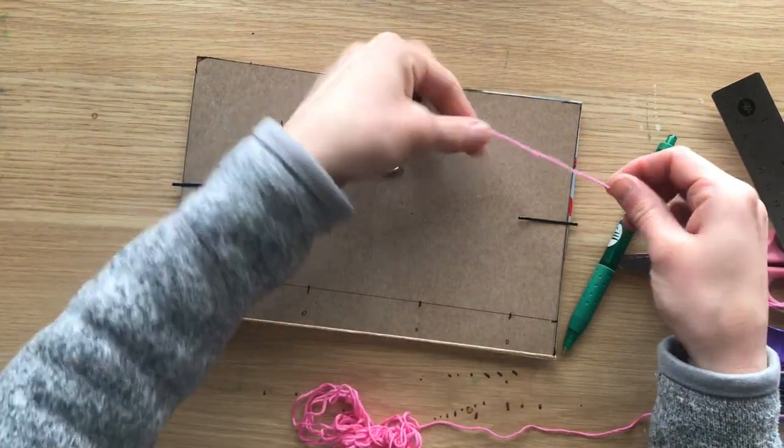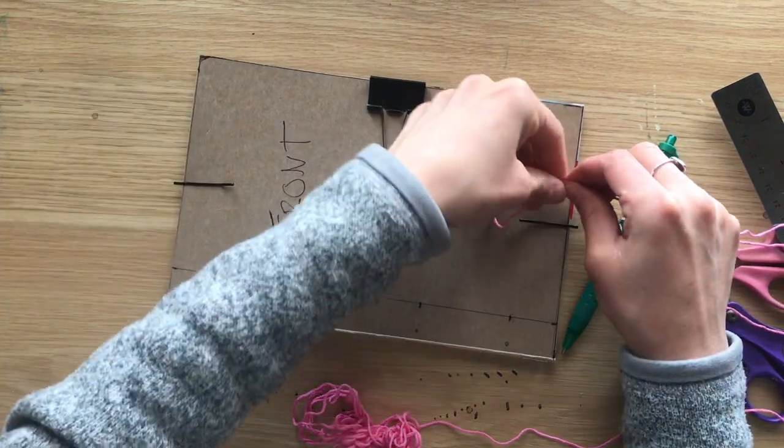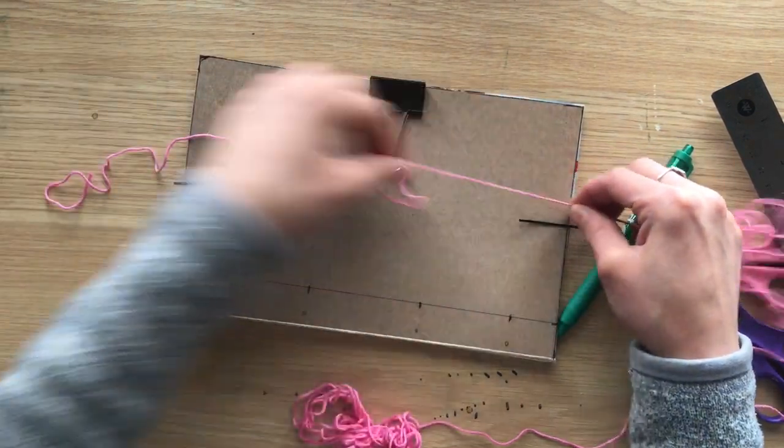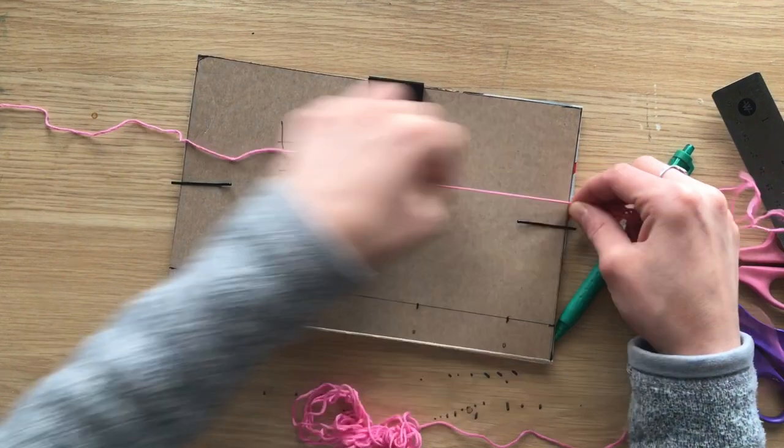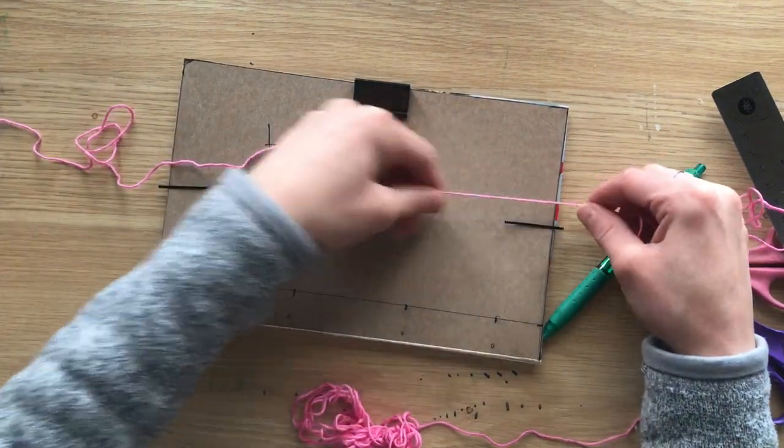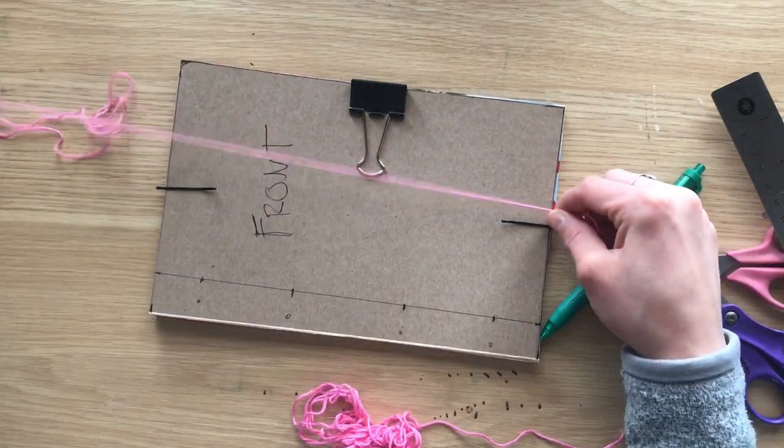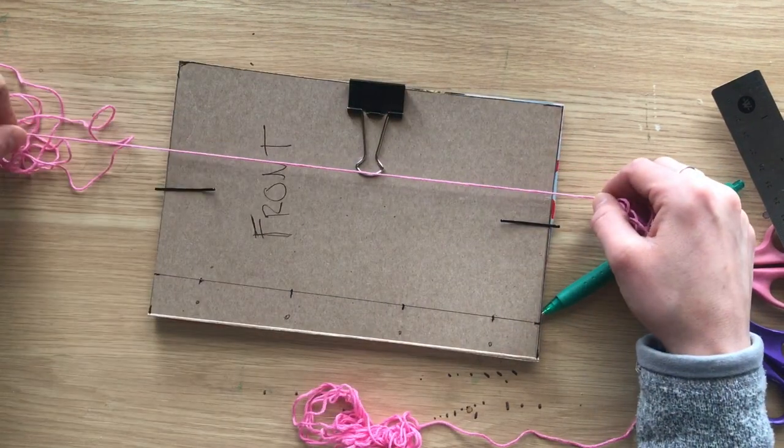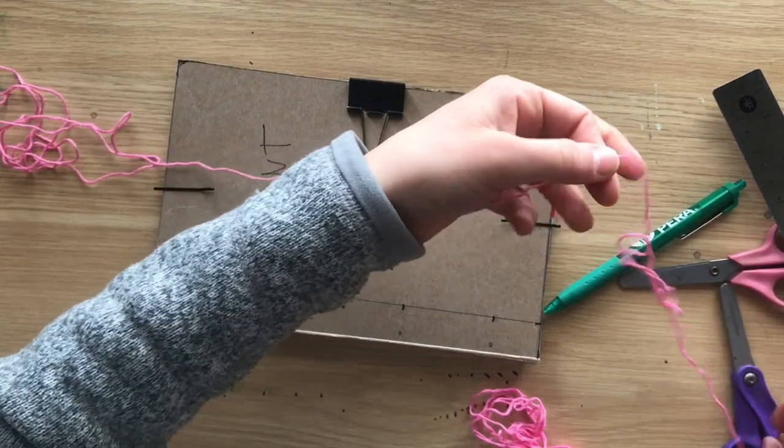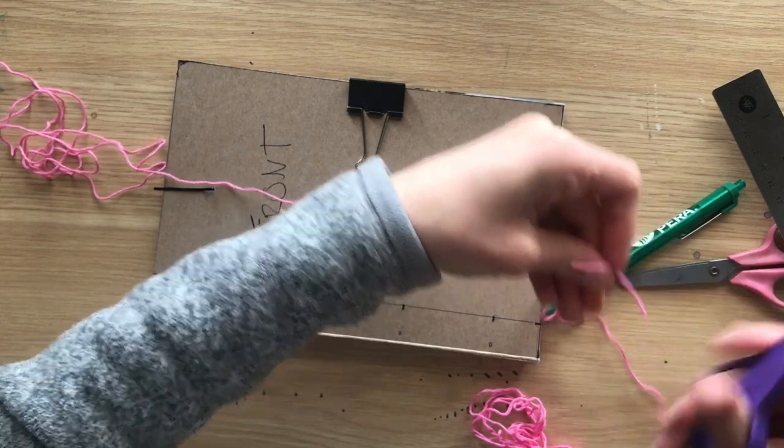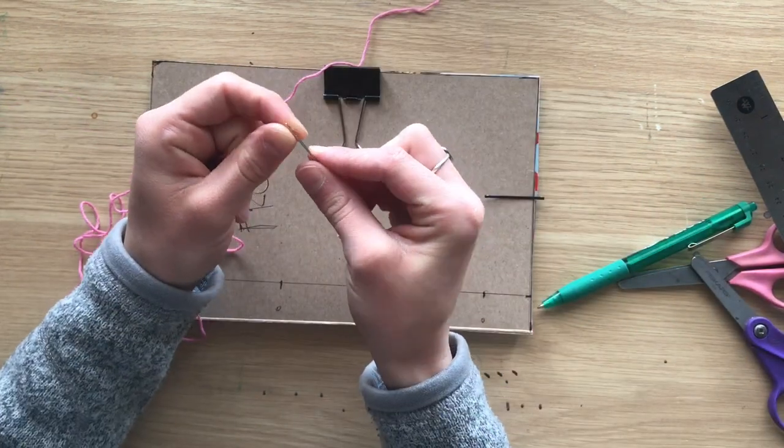Now it's time to get your string out. So I am using some pink embroidery floss, and in the video I measure times seven the length of my book, but you can actually just do times five. I always worry I'm going to run out of string, so I do times seven. If you're worried about it like me, you can also do times seven, but times five will work just fine. Cut it and then thread your needle.